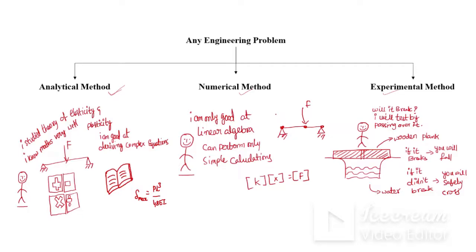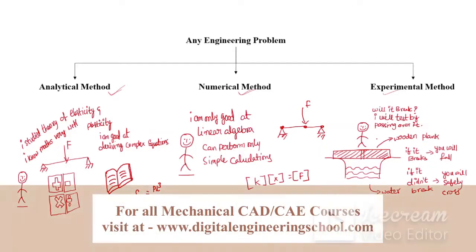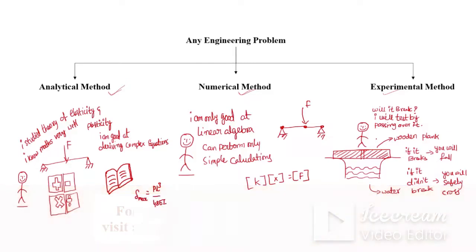Solving the problem using simple mathematics and principles of linear algebra — simplifying the system — is an example of the numerical method. The experimental method corresponds to scenario one, where you do no calculations and simply walk onto the plank: if it holds, you cross safely; if it breaks, you fall and drown.